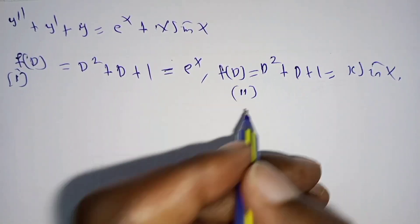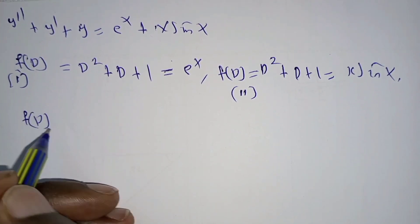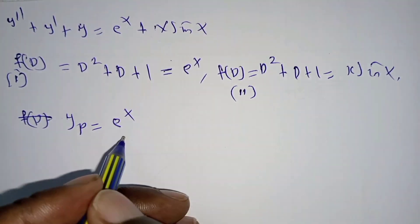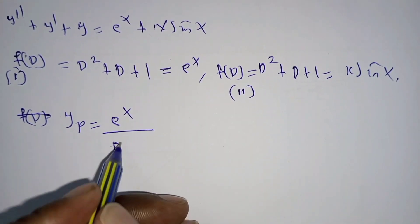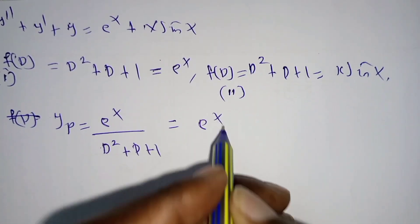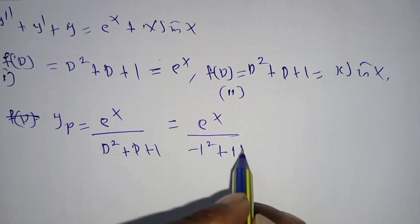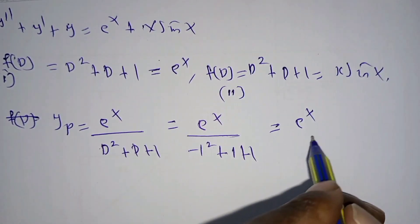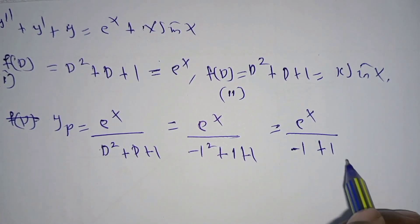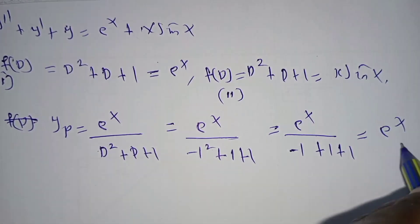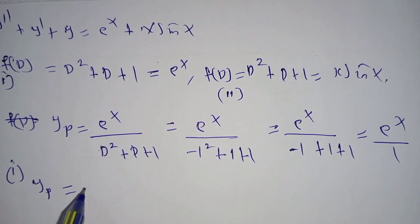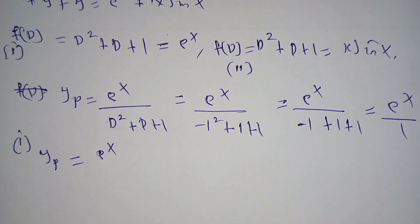Combining both cases: to get y_particular for case one, we have e^x over (D² + D + 1), which equals e^x over (1² + 1 + 1), which equals e^x over (−1 + 1 + 1), which equals e^x over 1. So y_particular (case 1) is given by e^x.